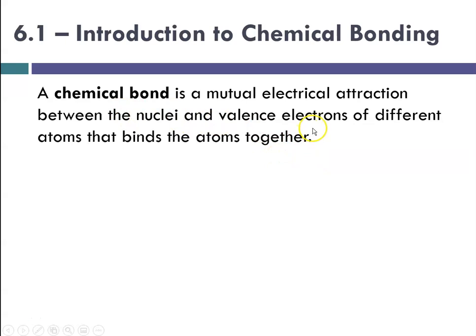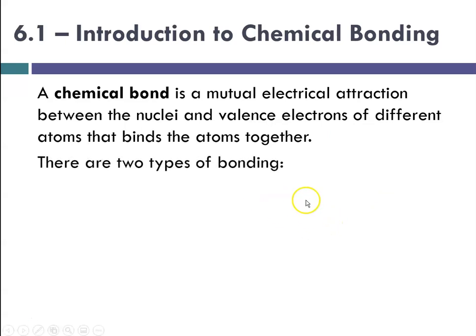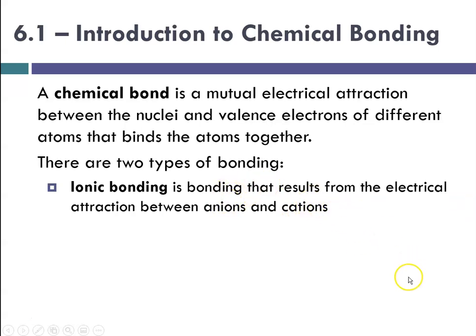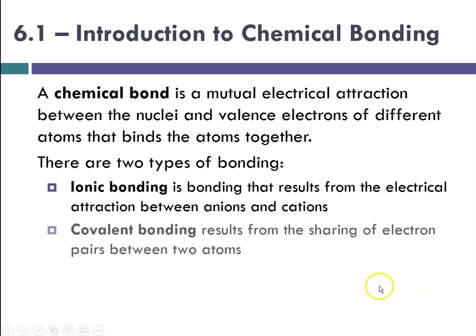Valence electrons are those in the outermost energy level — the outermost electrons. There are two types of bonding: ionic bonding, which results from the electrical attraction between anions and cations — where one atom gains electrons and another loses electrons — and covalent bonding, which results from the sharing of electron pairs between two atoms.